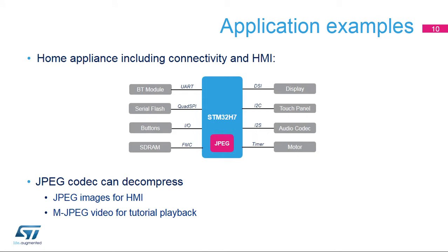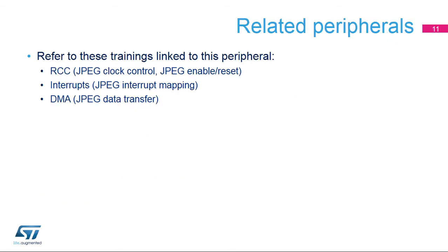Wearable applications require low-power management functions together with a high-quality user interface. In this scope, the JPEG Codec can be used to decode compressed background images or user pictures, or even to play back certain videos for tutorials. You can refer to the training slides related to RCC,